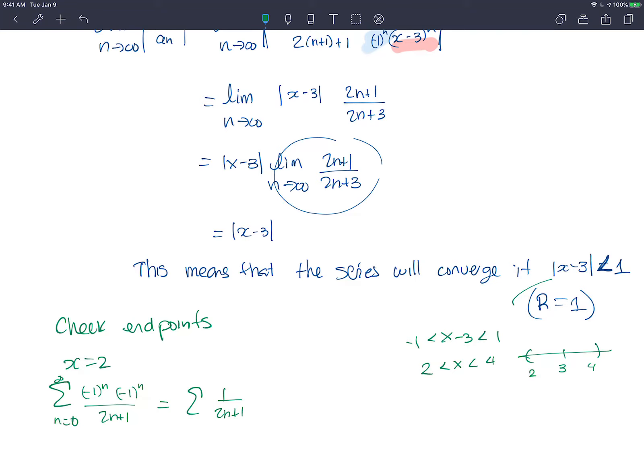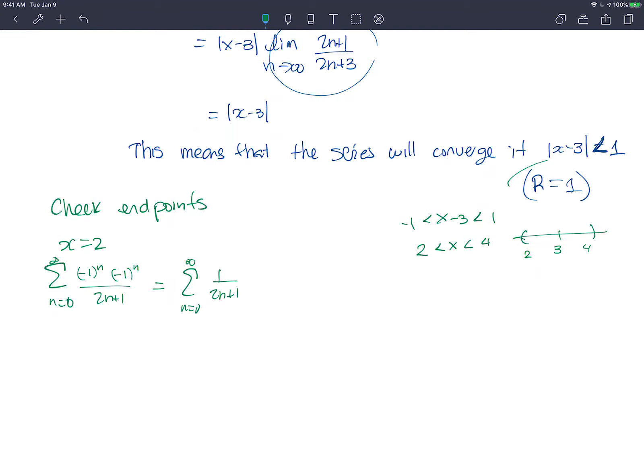So this is just 1 over 2n plus 1, and it behaves the same as the harmonic series. This is one of those when we do the limit comparison test with b_n equals 1 over n. You do the limit, if you remember what that means, you do the a_n over b_n.